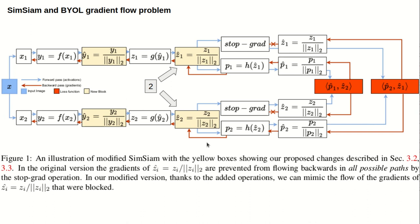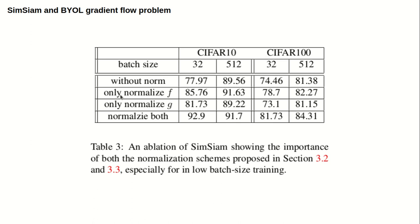Our second proposed modification is adding an L2 normalization after the projection step. The idea is to fix the target inconsistencies introduced by the stop-grad operation. We perform an ablation study and find the second normalization to be very important in the low batch size regime.